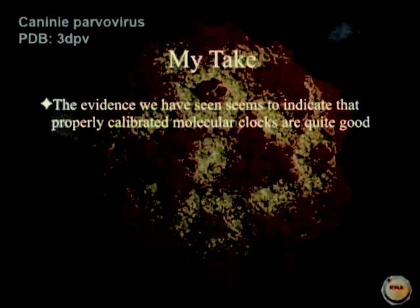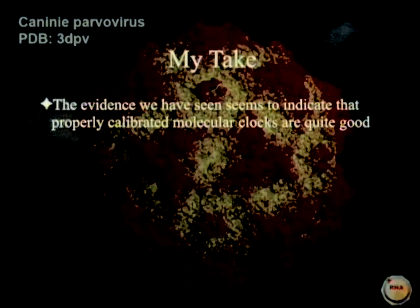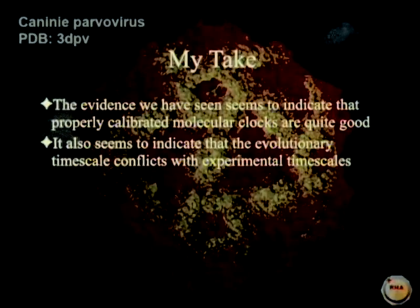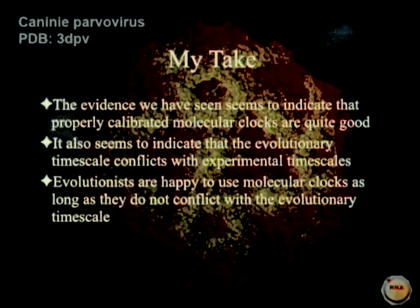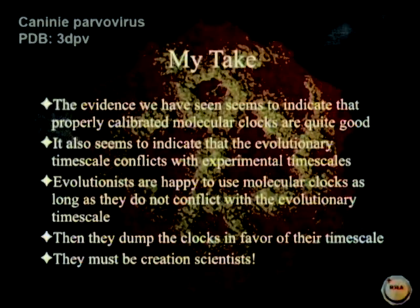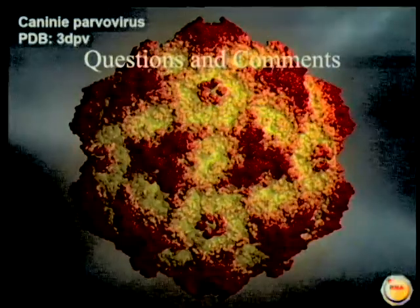The evidence we've seen seems to indicate that properly calibrated molecular clocks are quite good — you saw that in influenza A, where it's very good if used in an appropriate way. It also seems to indicate that the evolutionary timescale conflicts with experimental timescales. Evolutionists are happy to use molecular clocks as long as they do not conflict with the evolutionary timescale. Then they dump the clocks in favor of their timescale. Ignoring evidence like that — they must be creation scientists. But that's my opinion. Now it's your turn.